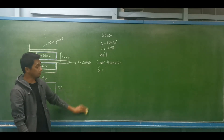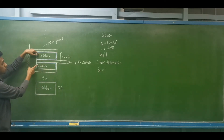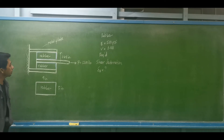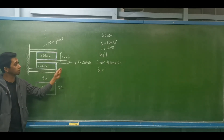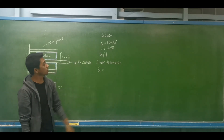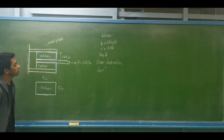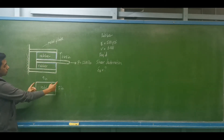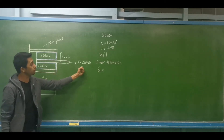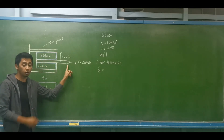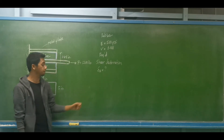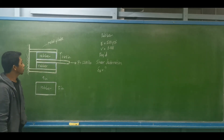We have two rubber pads attached to three metal plates. The rubber has a modulus of elasticity equal to 500 pounds per square inch and a Poisson's ratio of 0.48. The dimension of each rubber pad is 9 inches long and 5 inches wide. We apply a force of 1200 pounds on the middle plate and need to find the shear deformation.